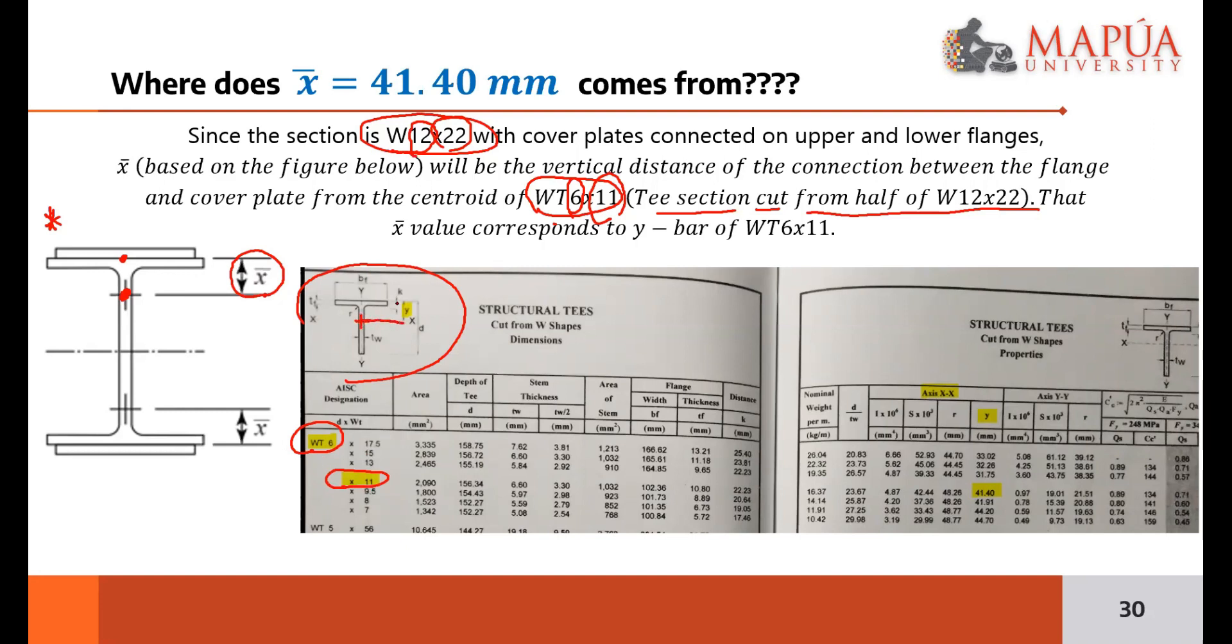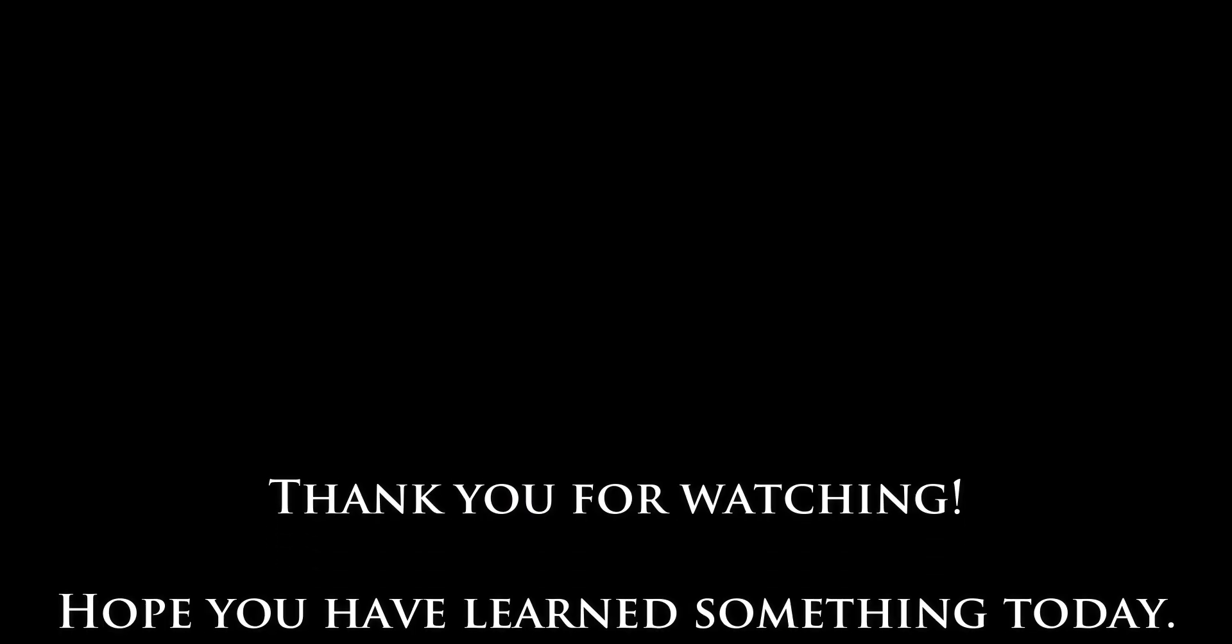When I looked at the WT section here, this is the WT section, like the picture I attached. So I looked for WT6 by 11. If this is the T section, its centroid is here. The distance of its centroid from the top is called Y. So I find Y. The Y is this. So this is the Y of WT6 by 11: 41.4. That's where 41.4 came from. Again, that's the location of the centroid of WT6 by 11. So that's how you get X-bar when it's a wide flange with cover plates.